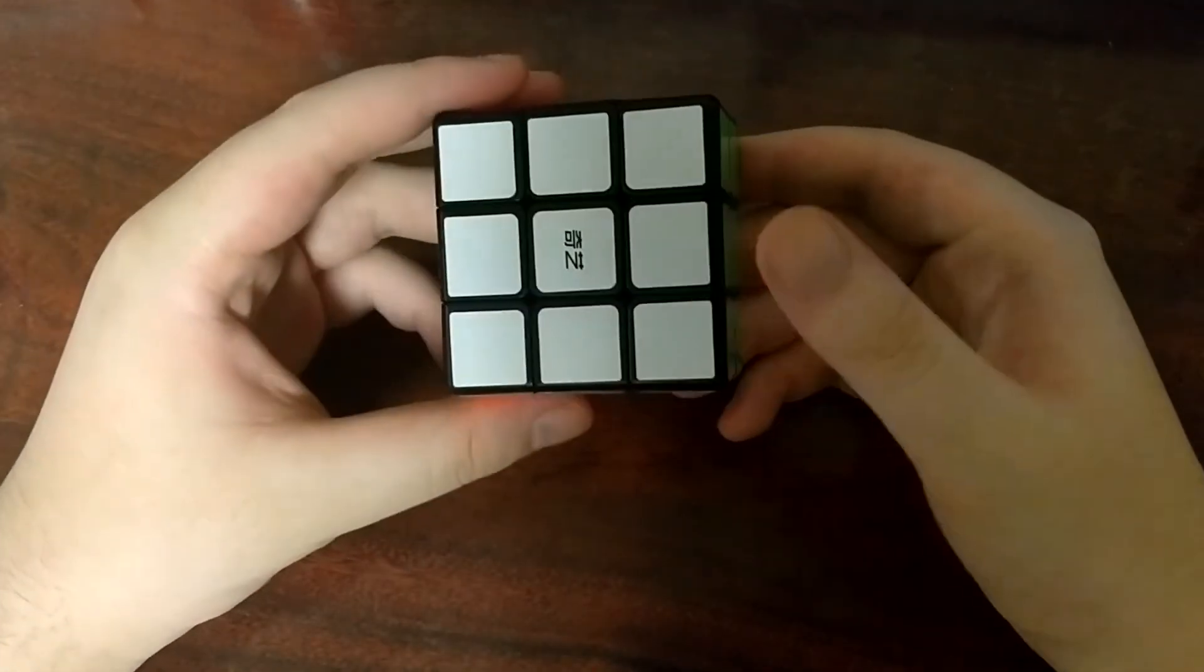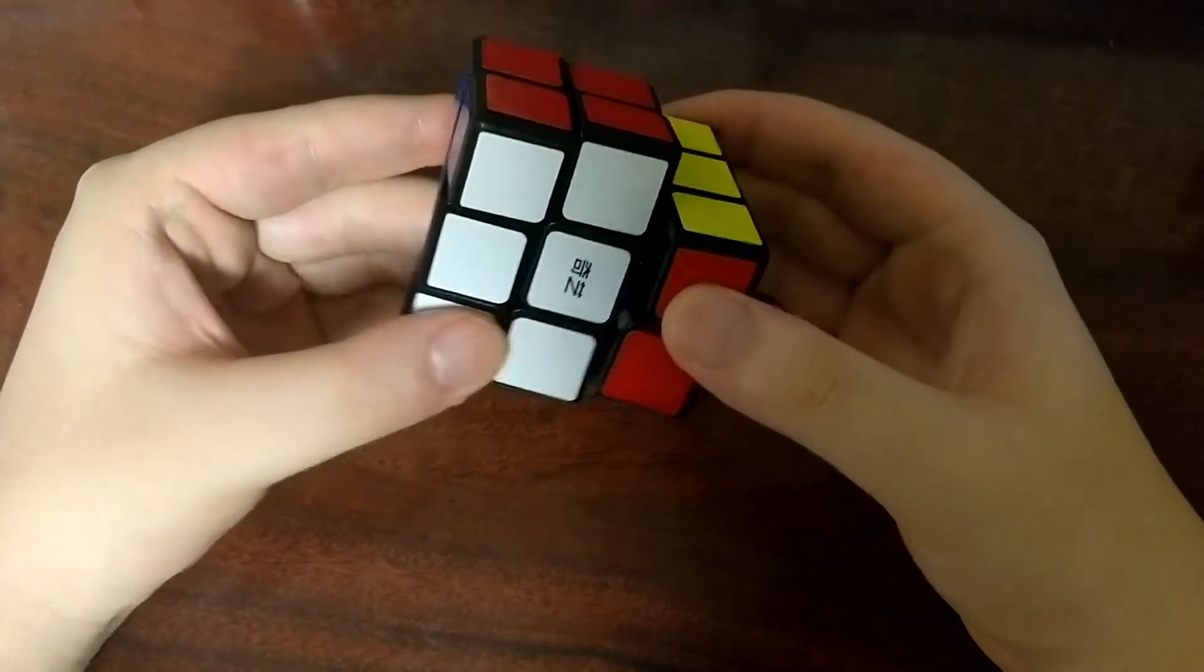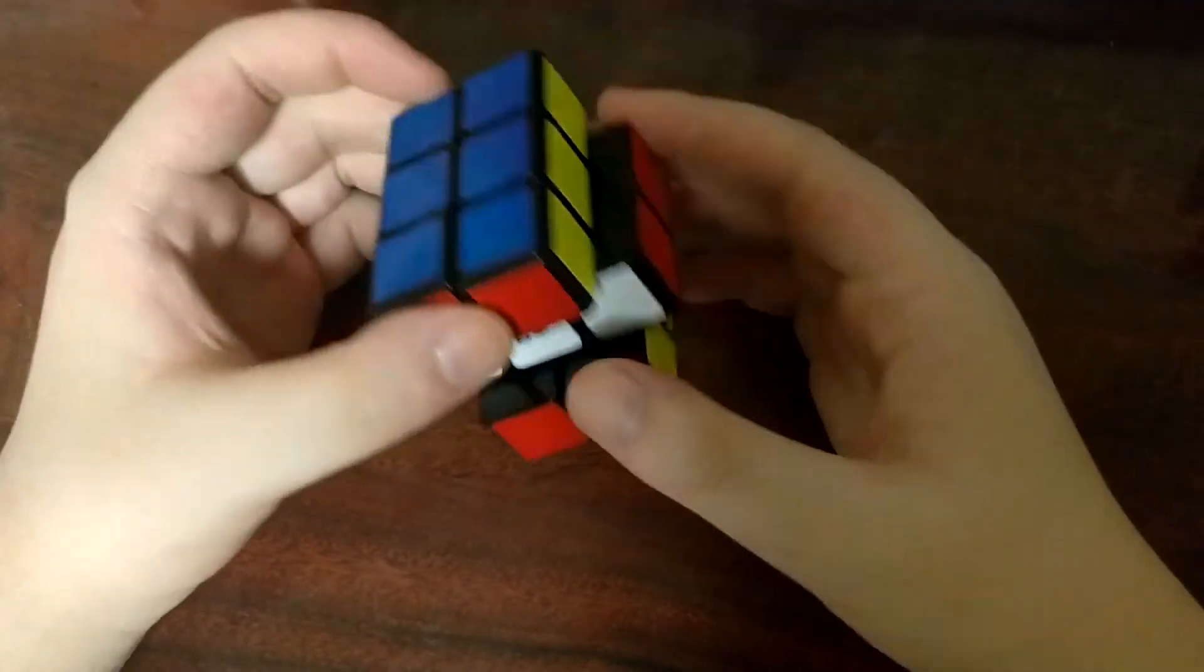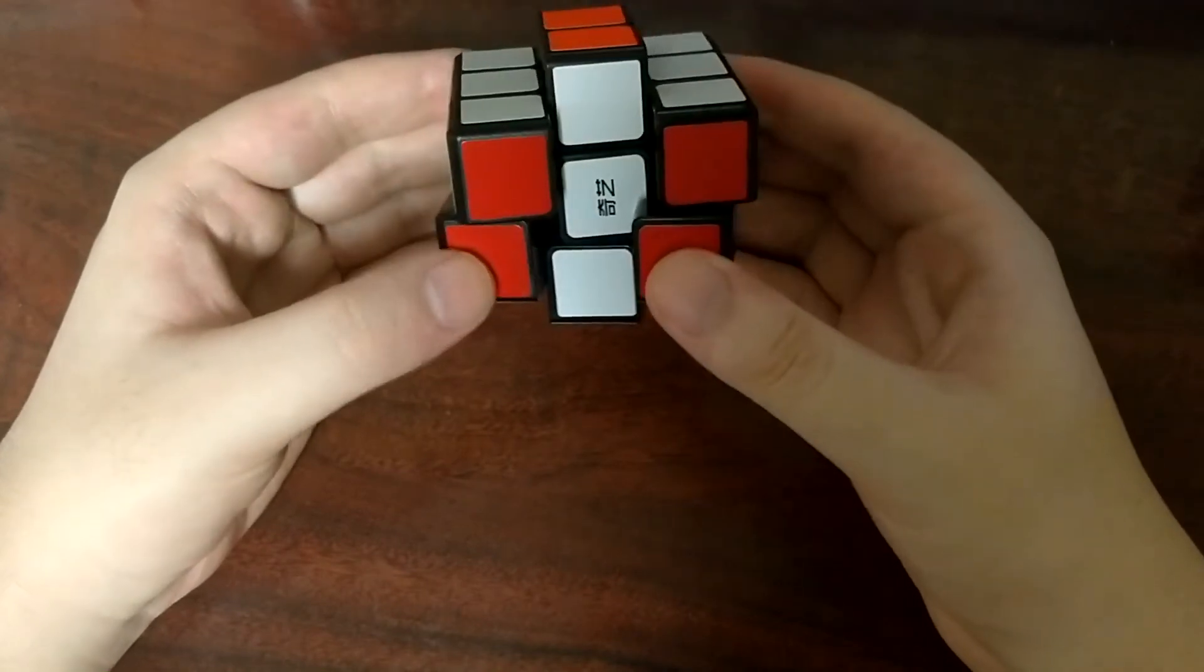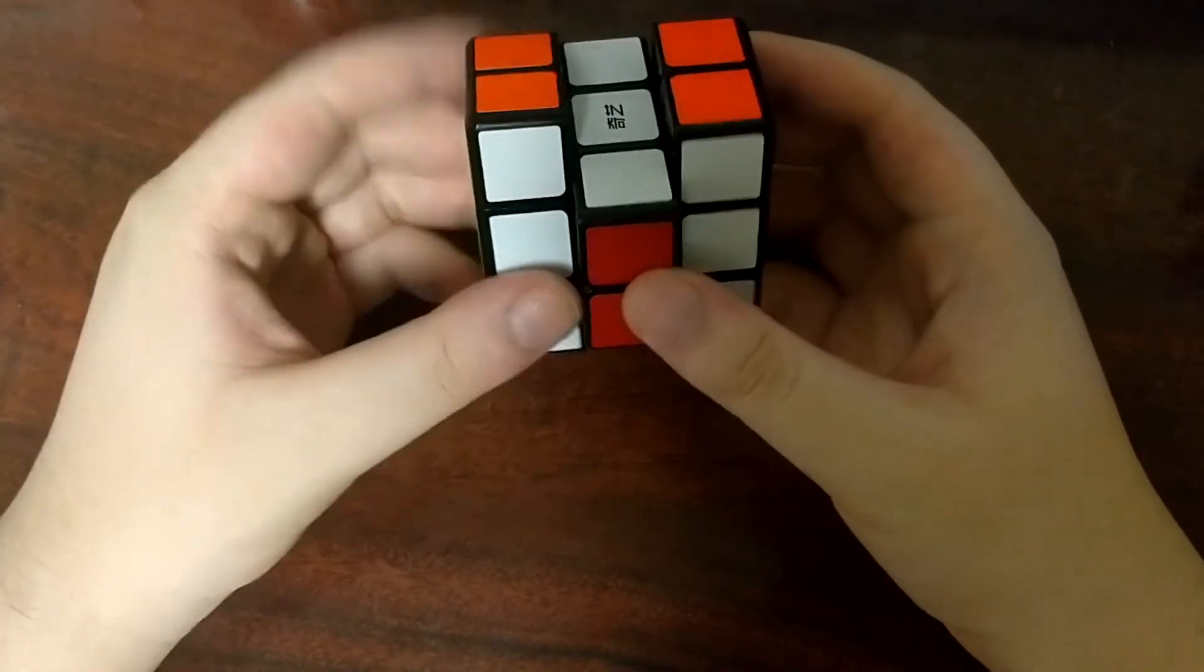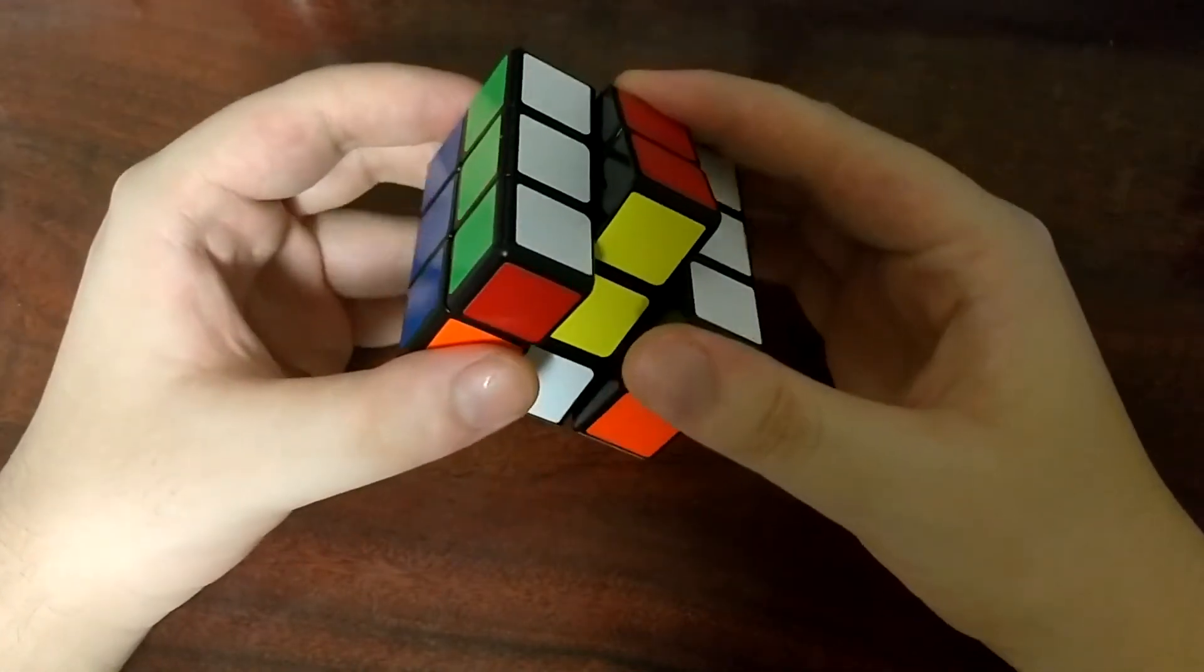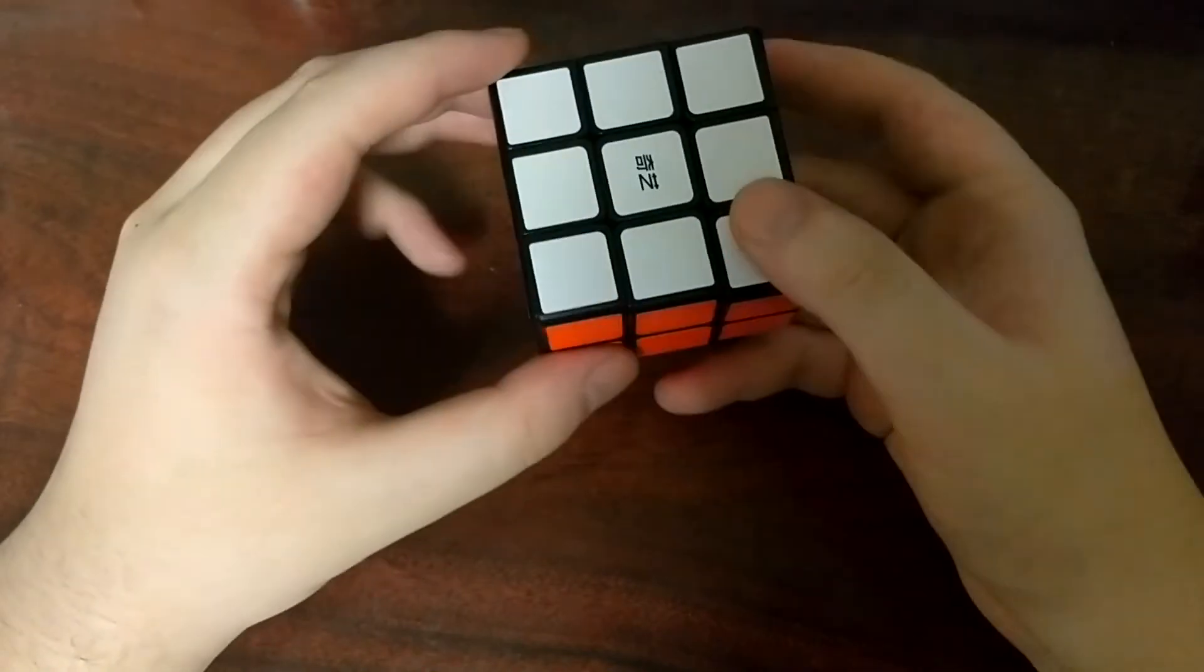Here's something I did not notice about the 2x3x3. So if you turn one of the layers like this it would appear like you can't turn this face but you actually can. This is super interesting the way it just sort of goes behind the other. You can't turn it like this but you can turn it like this. That is really cool.